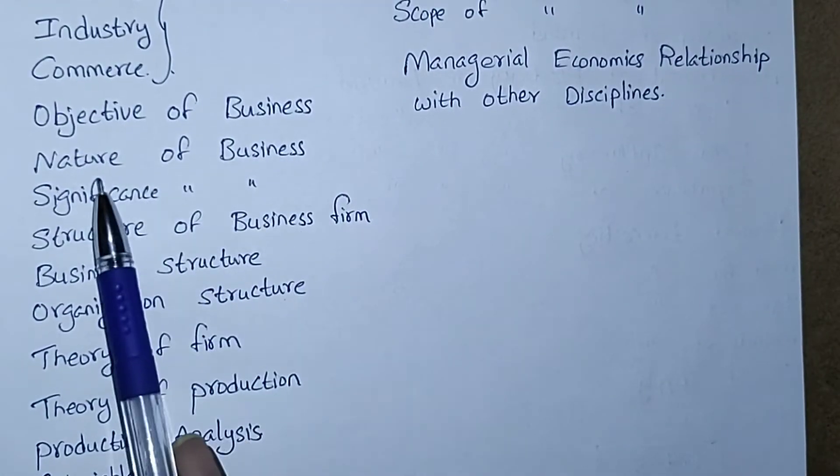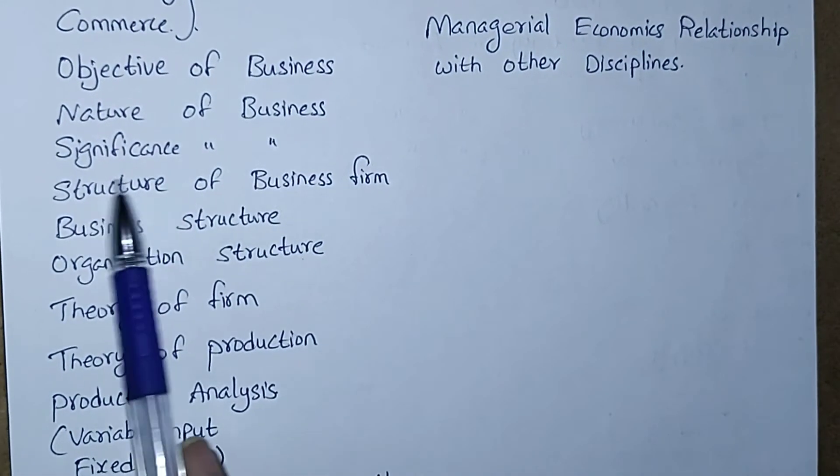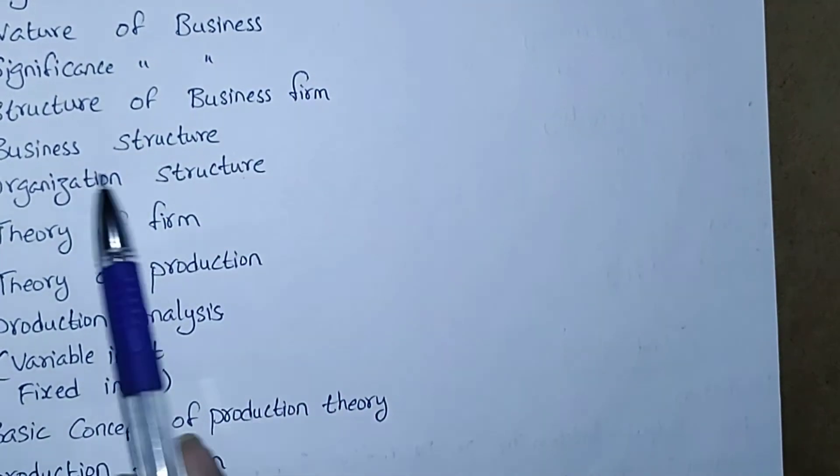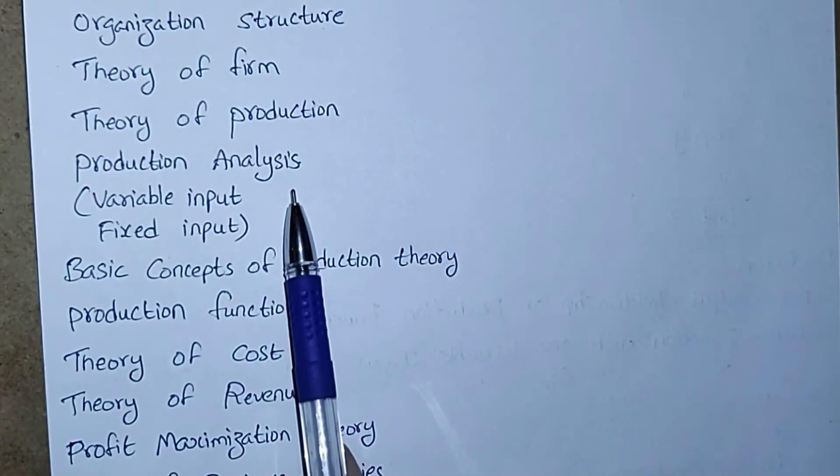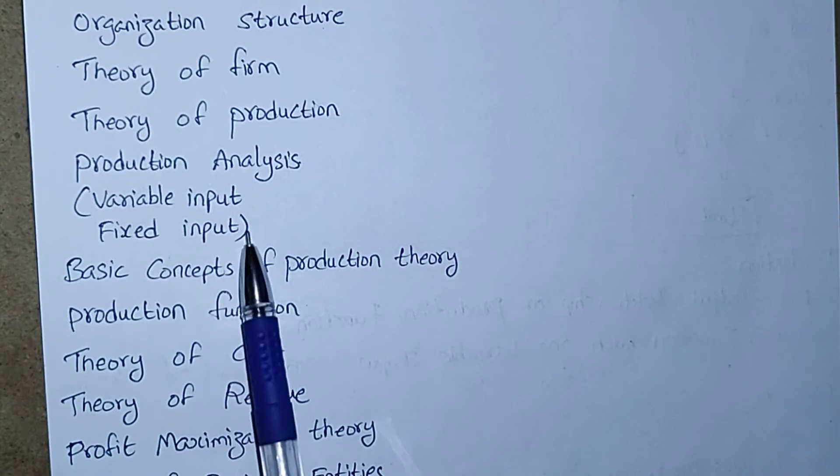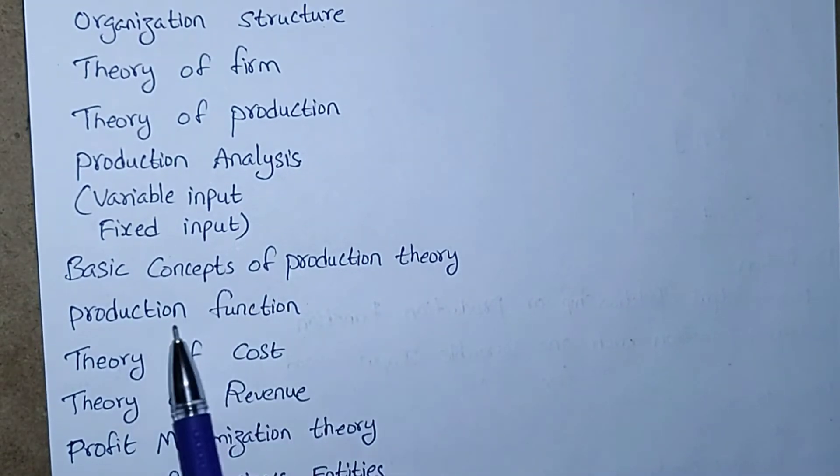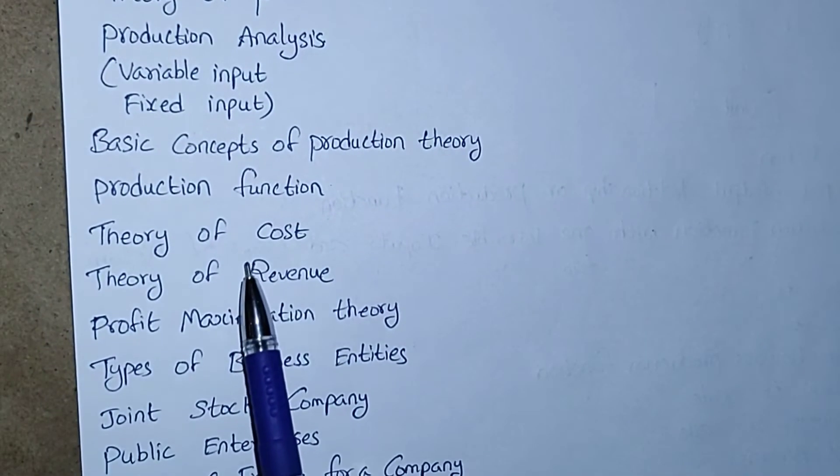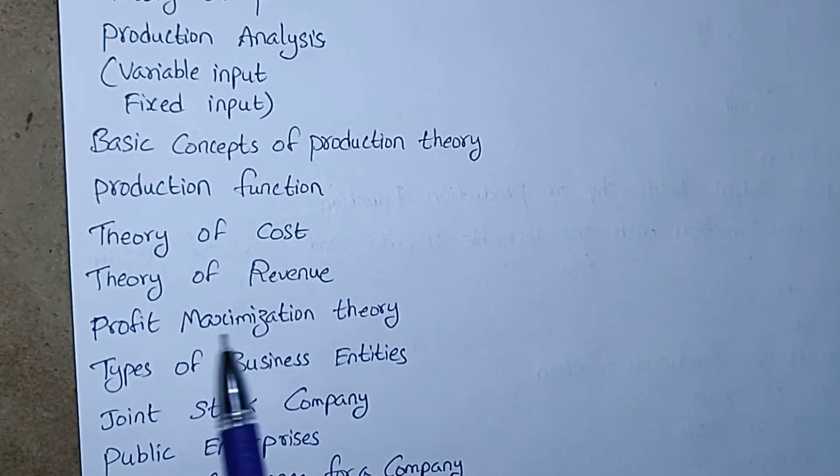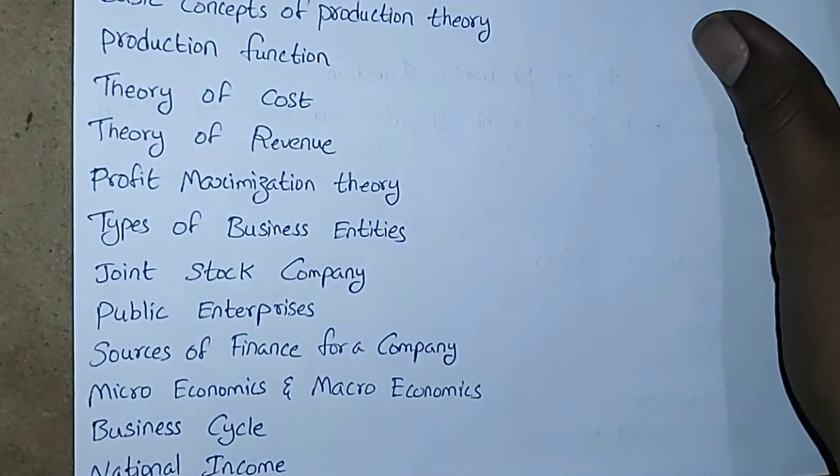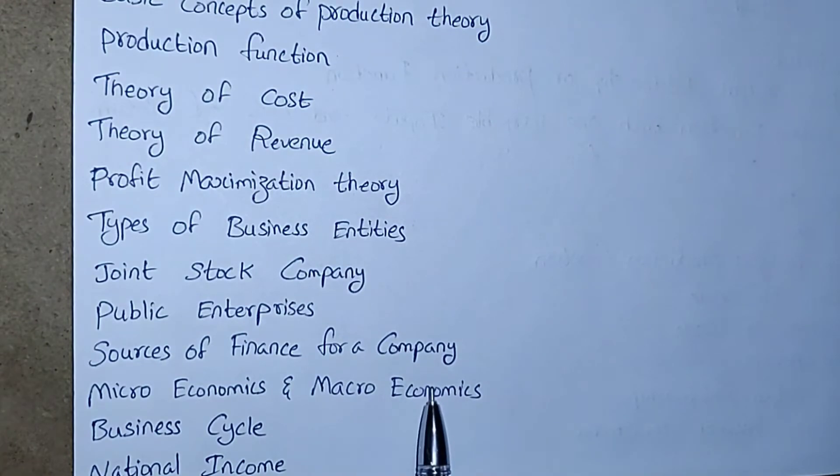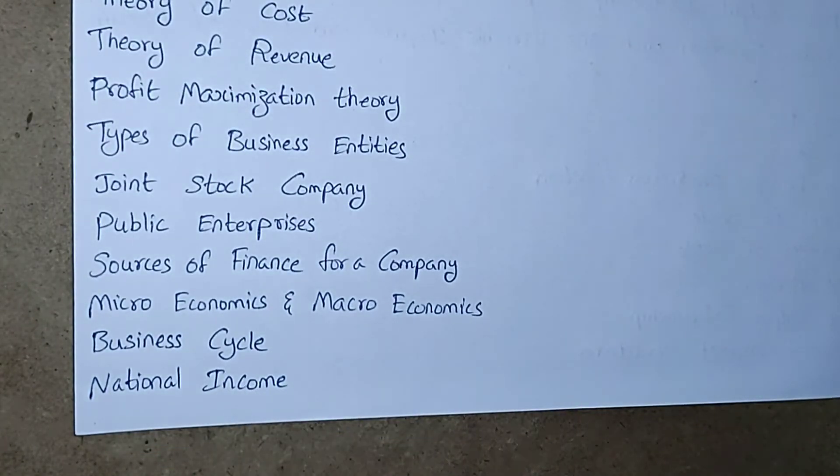Objective of business, nature of business, significance of business, structure of business firm, business structure, organization structure, theory of firm, theory of production, production analysis, variable input, fixed input, basic concepts of production theory, production function, theory of cost, theory of revenue, profit maximization theory, types of business entities, joint stock company, public enterprises, sources of finance for a company, business cycle, and national income.